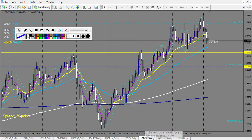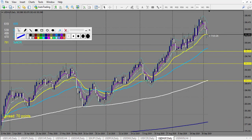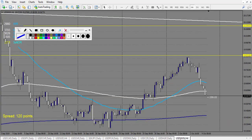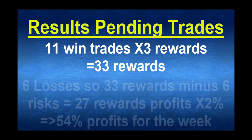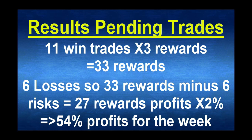USD/DKK inside the envelope - don't count it. USD/XH didn't touch. USD/HUF didn't touch. USD/MXN didn't touch. For the pending envelope strategy: 11 wins times 3 reward equals 33 reward, and 6 losses equals 6 risk, so 27 reward net times 2% equals 54% profit for this specific strategy.